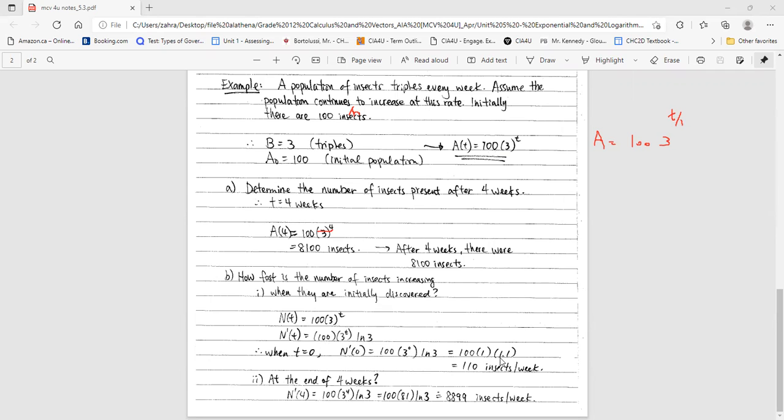Use a calculator. You find the number of insects at the end of 4 weeks. Again, the rate at the end of 4 weeks means instead of the time here you put 4. Use a calculator to find the number of insects. There is a worksheet associated with that.